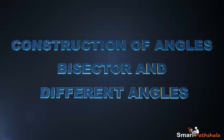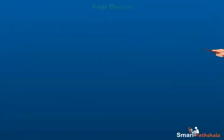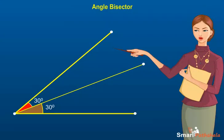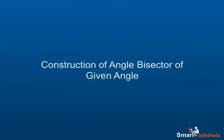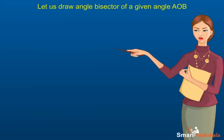Construction of Angles by Bisector and Different Angles. This module will explain construction of angles by bisector and different angles. An angle bisector is the line that divides an angle into two equal parts. Let us learn the steps to construct the angle bisector of a given angle AOB.